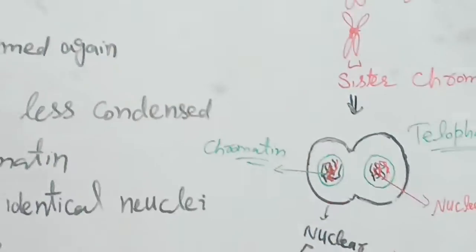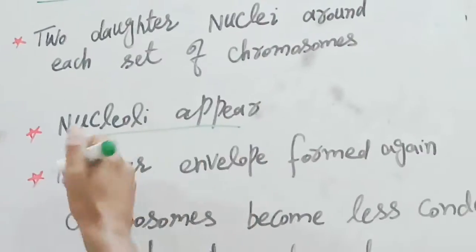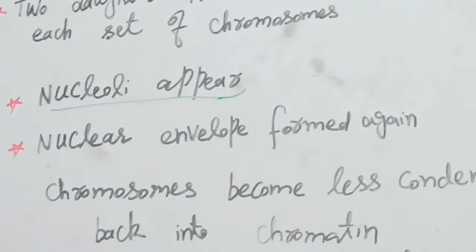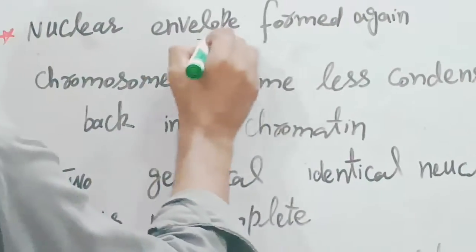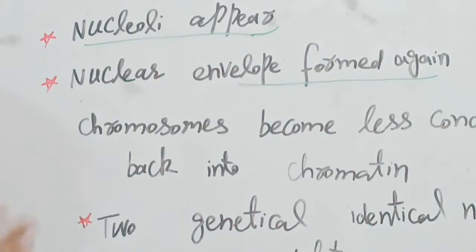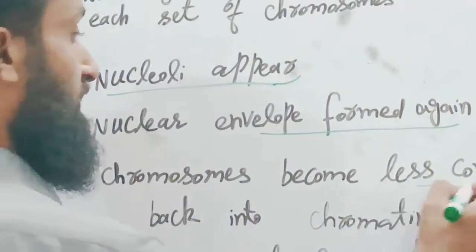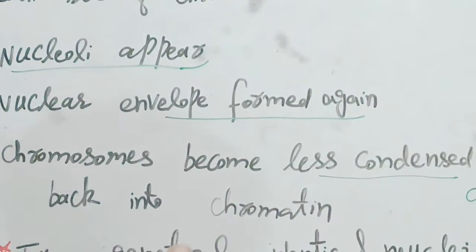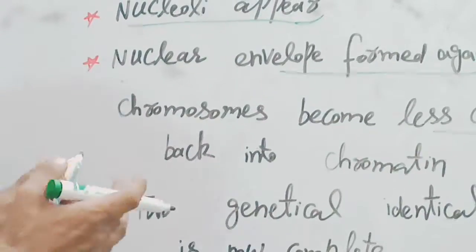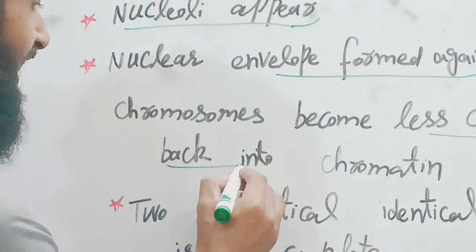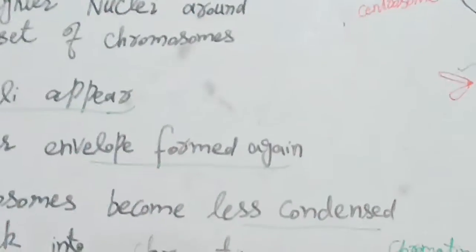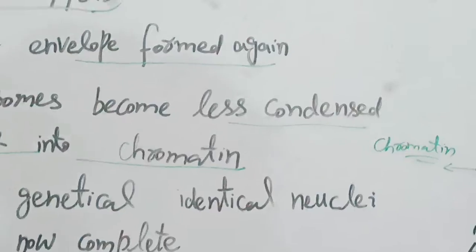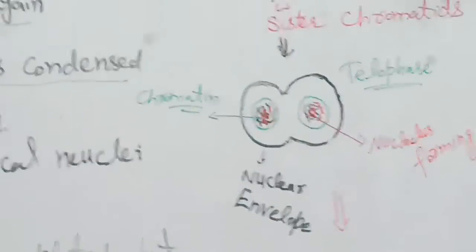The chromosomes become less dense and condensed, and they revert back into chromatin form. The nuclear envelope is reformed around the nucleus. Chromatin is the dispersed genetic material in the nucleus. We studied about chromatin in the first phase of mitosis.